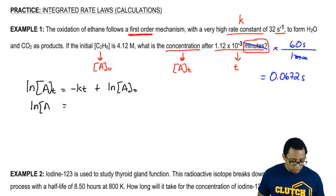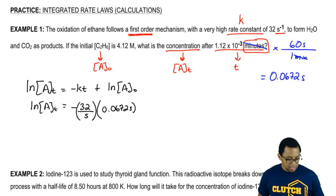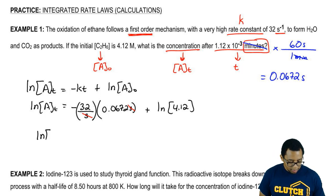Here LNAT equals K is negative 32 seconds inverse. Remember, seconds inverse just means that it's over seconds times 0.0672 seconds. And you can see why you want the units to be the same because here these seconds cancel out with these seconds plus LN of 4.12. So what we're going to do here is multiply these two together, remember the negative sign in front, plus LN of 4.12.